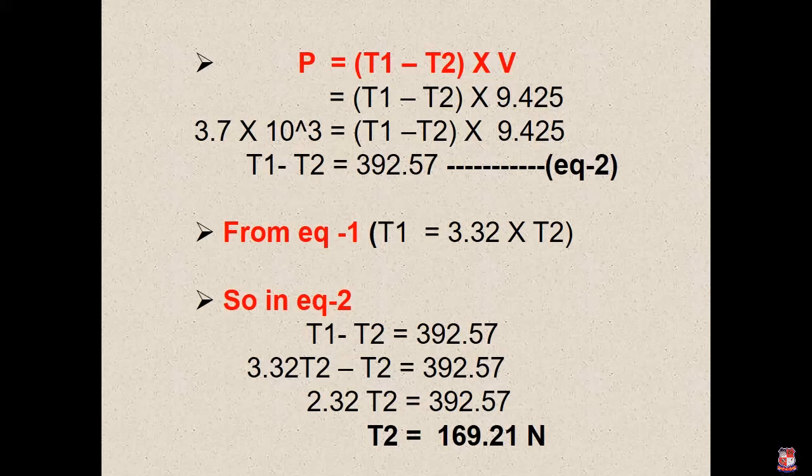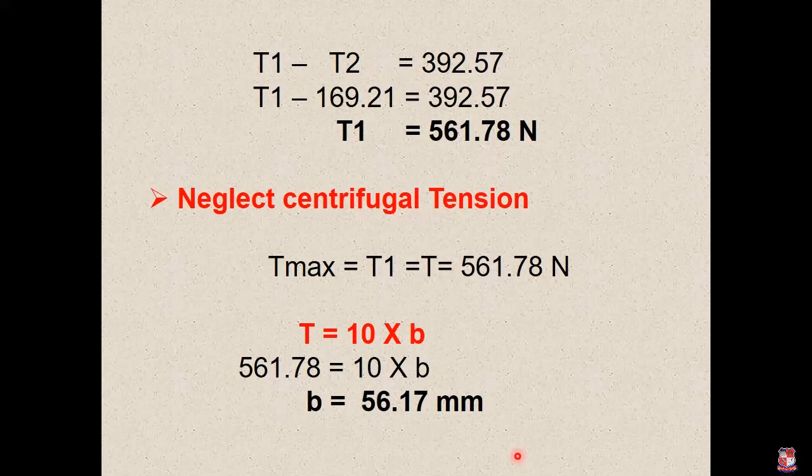Now we have T2 value, so we can find T1. From equation T1 minus T2 equals 392.57, T1 minus 169.21 equals 392.57, so T1 we will find is 561.78 Newton.